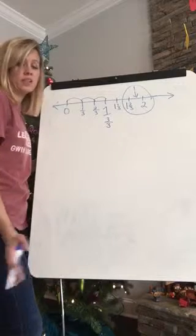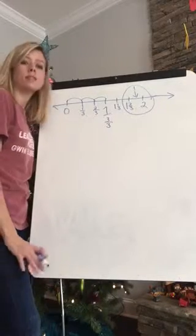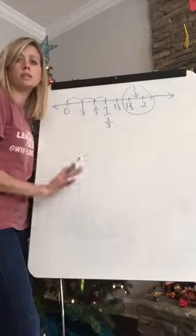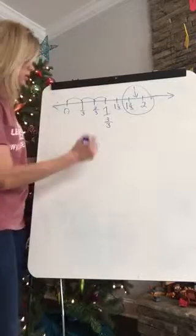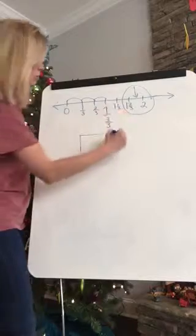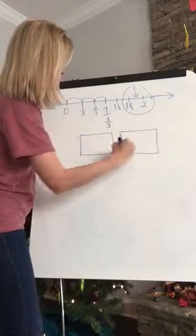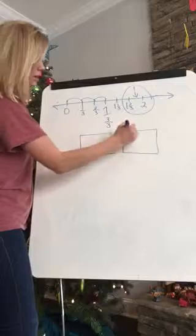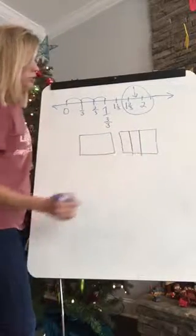So if you're not sure about this, this is kind of a hard one to think about. We've talked a lot about drawing a model. This is a great one to draw a model with. So let's start, and we've got one whole, and then on our other whole, we've got two-thirds.